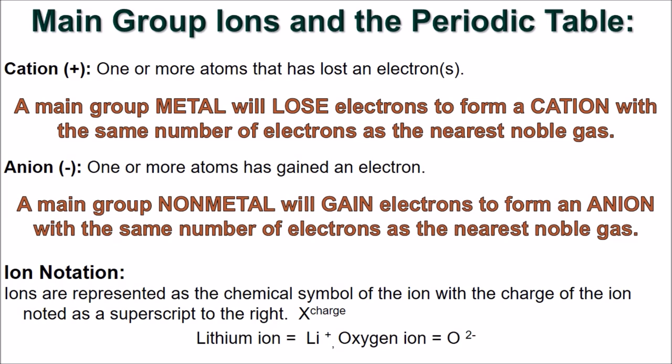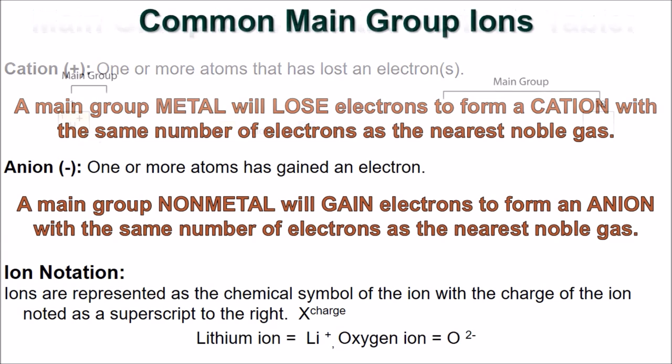Main group ions will attain the same number of electrons as the nearest noble gas. Ions are represented by the chemical symbol of the element, with the charge of the ion noted as a superscript to the right.